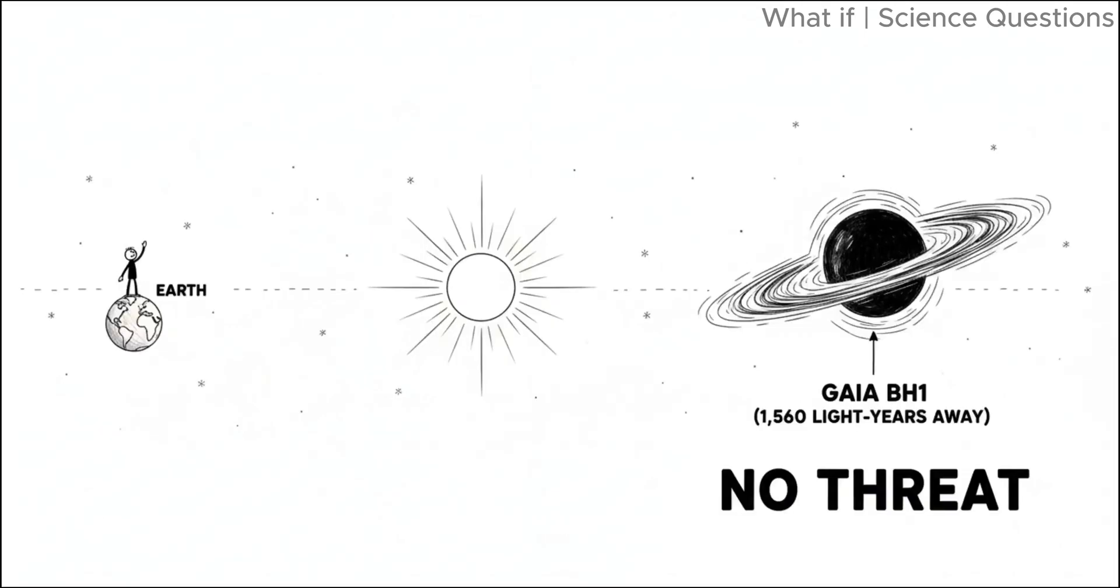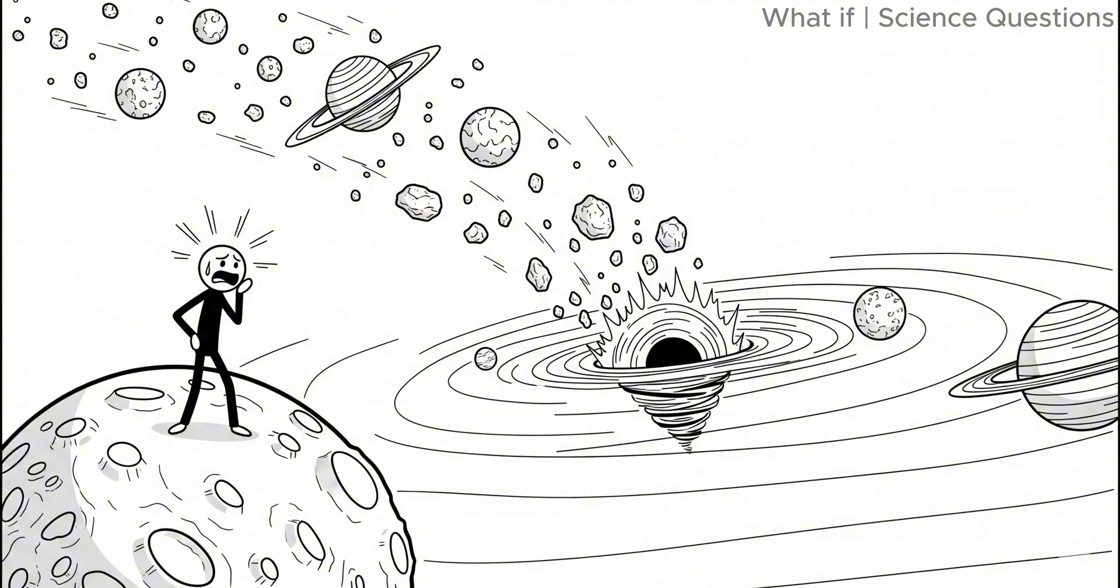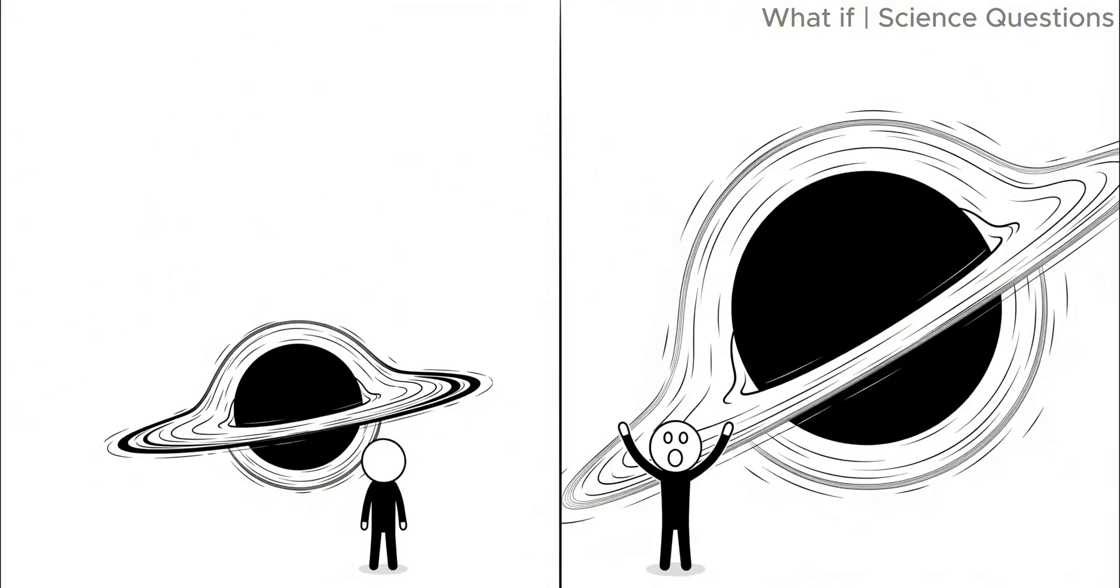The closest known black hole to Earth is called Gaia B-H1, located about 1,560 light years away. That's incredibly far, so far that it poses no threat. But black holes don't have to be close to be dangerous. Even a stellar mass black hole, about 5 to 10 times the mass of our sun, could wreak havoc if it wandered too close to our solar system. And there are even more terrifying types. Supermassive black holes, millions or billions of times heavier than our sun, lurking at the centers of galaxies, like Sagittarius A-star at the center of the Milky Way.